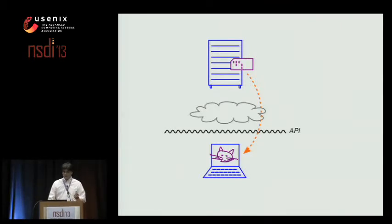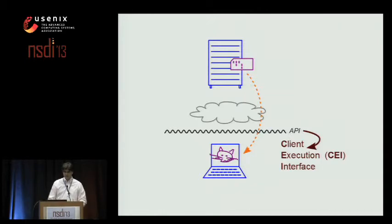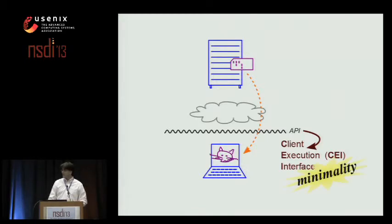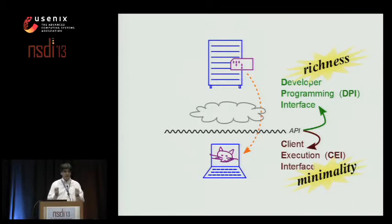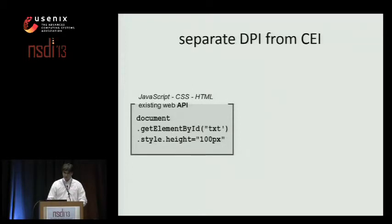On one hand, it specifies the behavior of the program when it arrives on the client — let's call that the client execution interface, or CEI. We want this interface to be as simple as possible so we can understand its semantics and implement them correctly. If we really want isolation, we want this CEI to be minimal. But on the other hand, the web API has also been serving as a developer programming interface, and that's driven it to get fancier and fancier — fancier graphics, layout, text — all crammed into this developer programming interface.